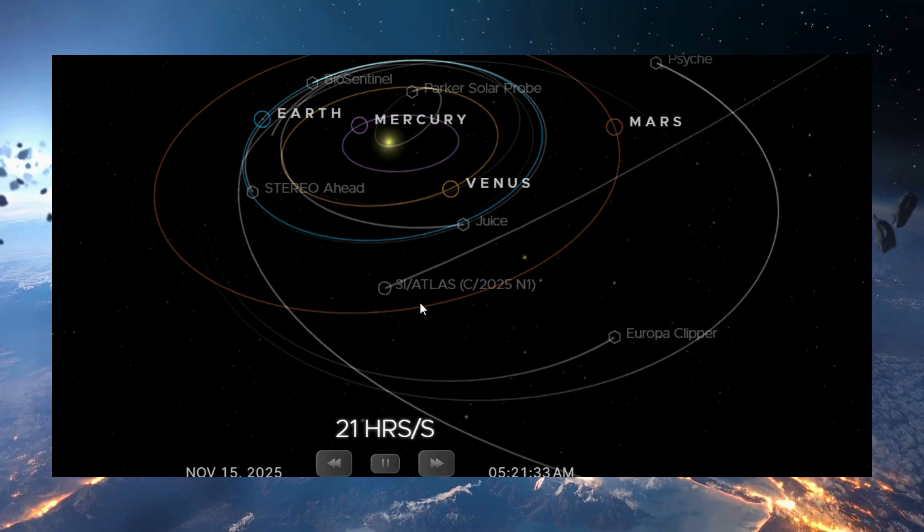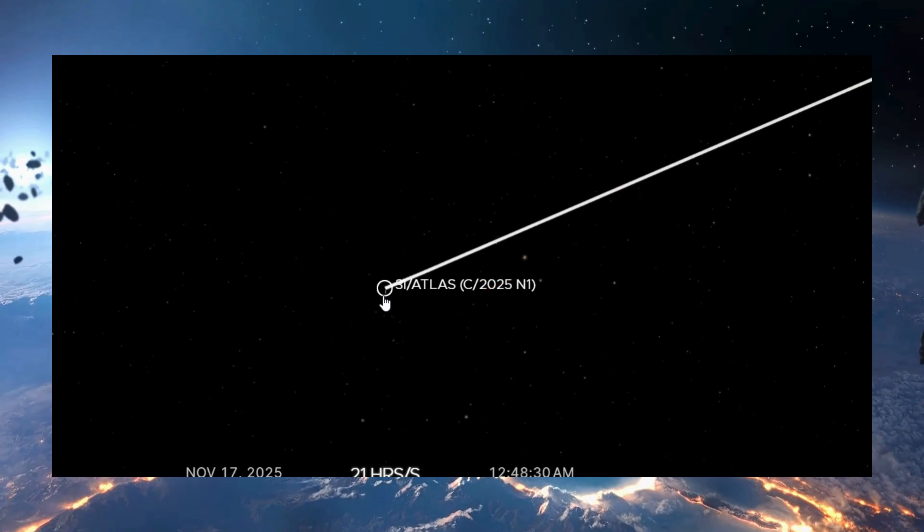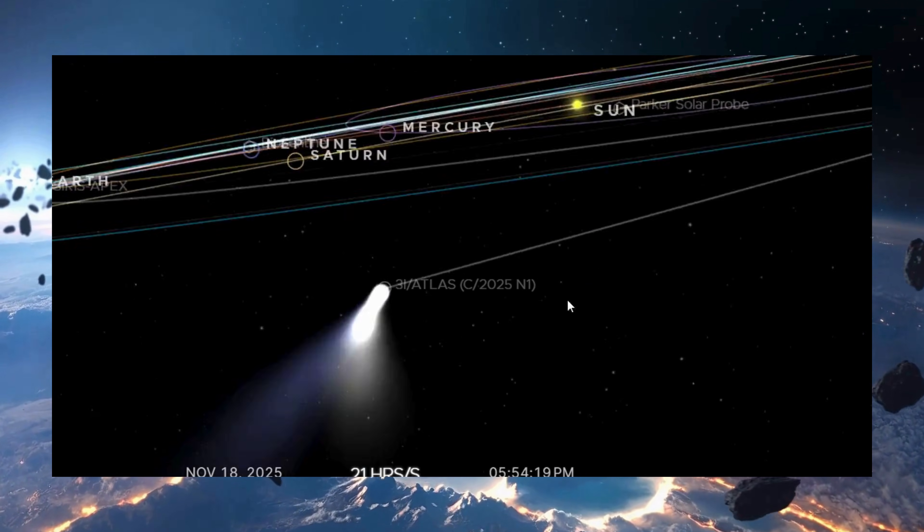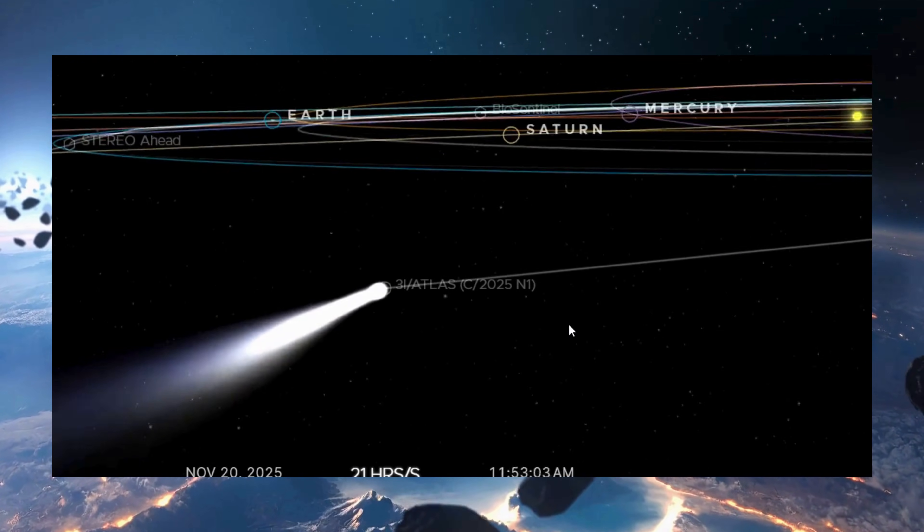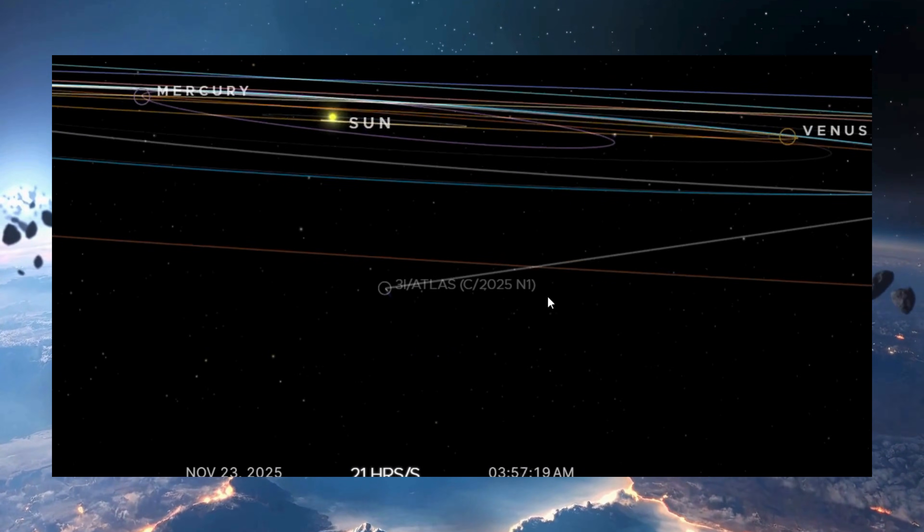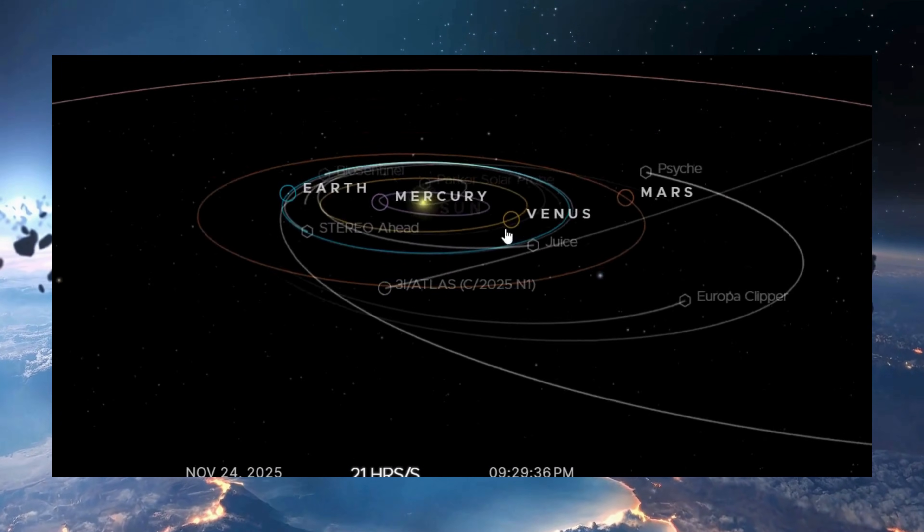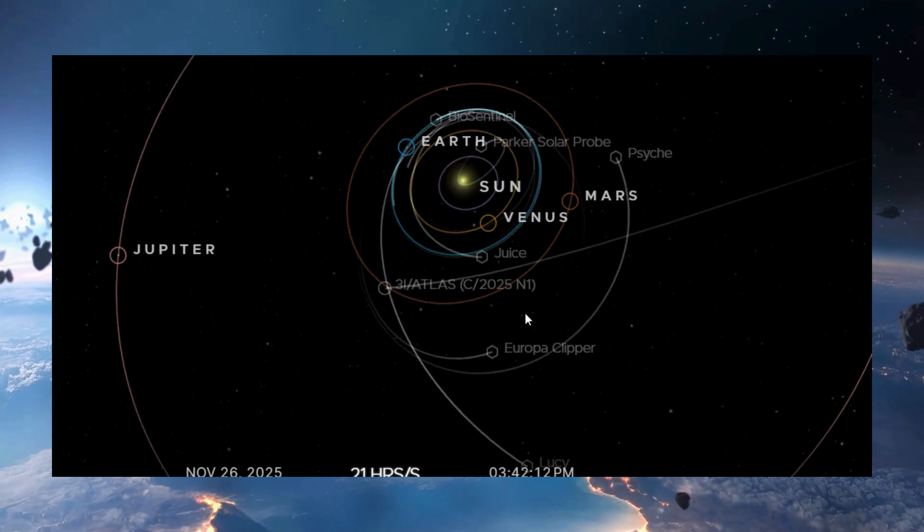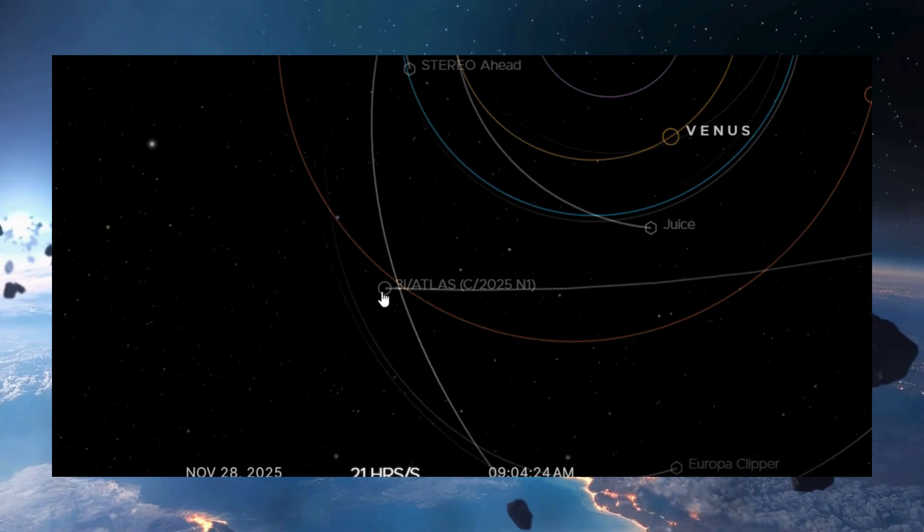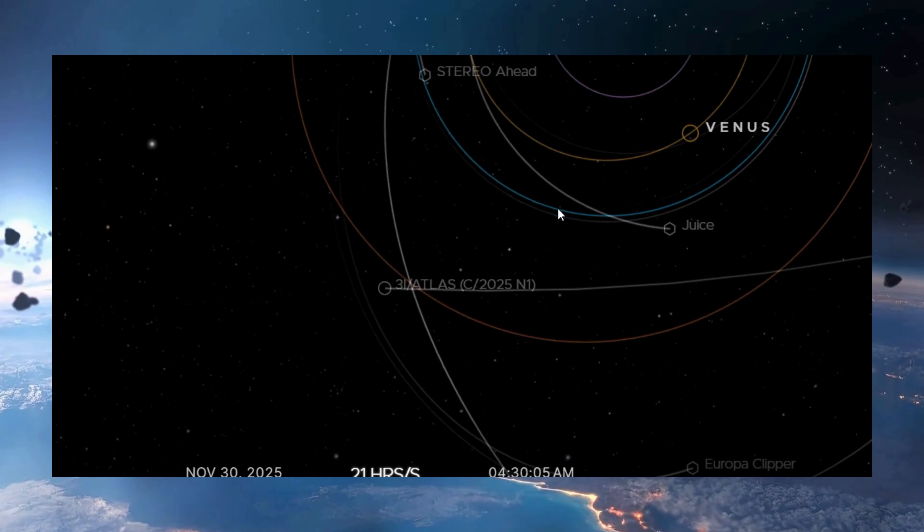The positional accuracy reached about 0.028 arc seconds. To put that into perspective, that's like spotting a coin from over 100 kilometers away. With precision like that, scientists were watching for any sign of non-gravitational acceleration. And they found none. Not even a hint.